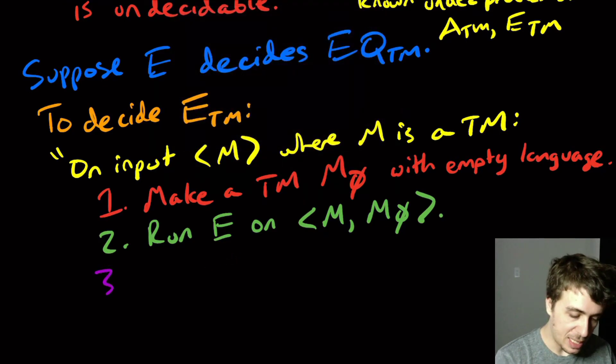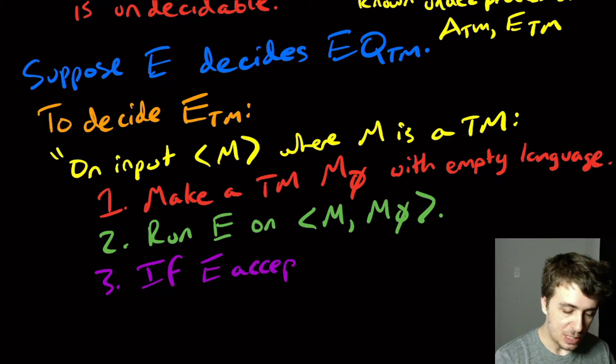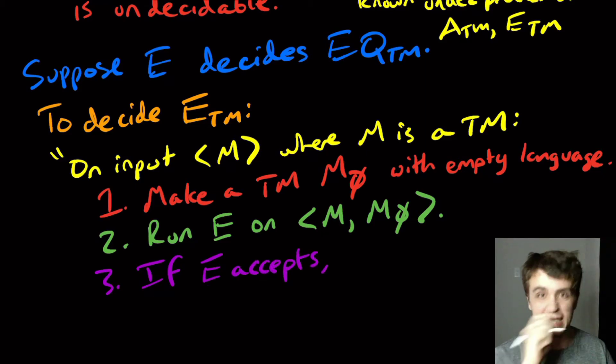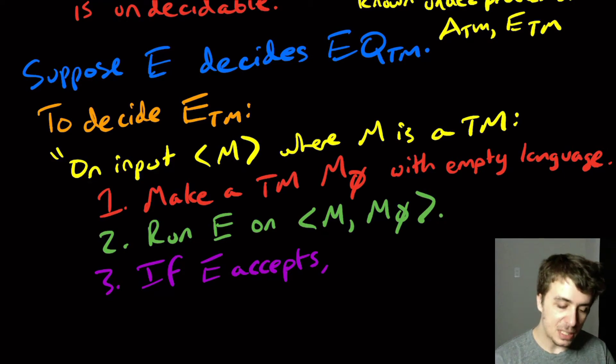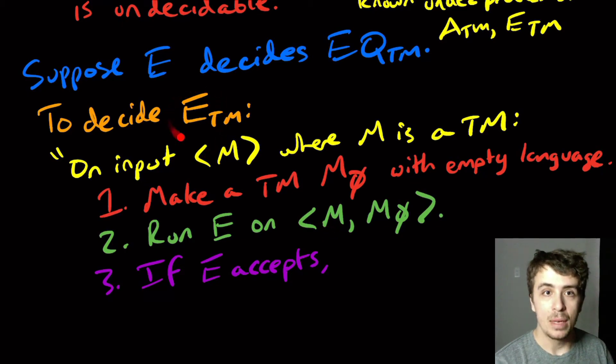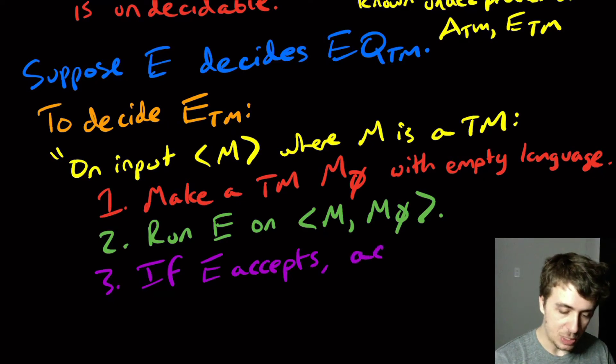So then what we can say is, if E accepts—and we know that it must accept or reject because it's supposedly a decider—so if it says they really are the same, then that means that M's language is empty, and I'm trying to decide the emptiness problem. So I need to say accept here.